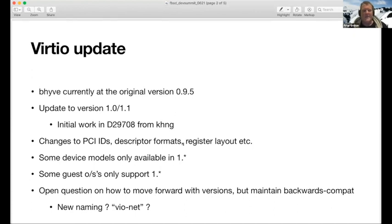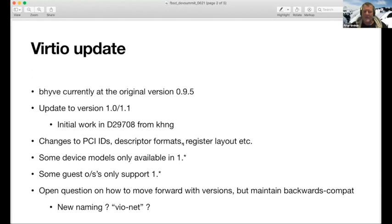There's an open question of how we try to move forward without breaking things when we update what the default version is. We also have the problem of older OSes that only support 0.9.5 — like if you want to run a previous FreeBSD 10 VM. There's a compatibility jump between 0.9.5 and version 1 that means if we only support version 1, we can't work on 0.9.5. My proposal is to change the name from virtio-device to just VIO, leaving virtio- as a way of specifying the existing format. So I'm very interested to know what people think about that.